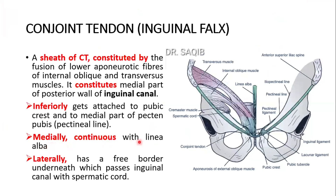Medially, it is continuous with the linea alba. Laterally, it has a free border underneath which passes the inguinal canal with the spermatic cord.